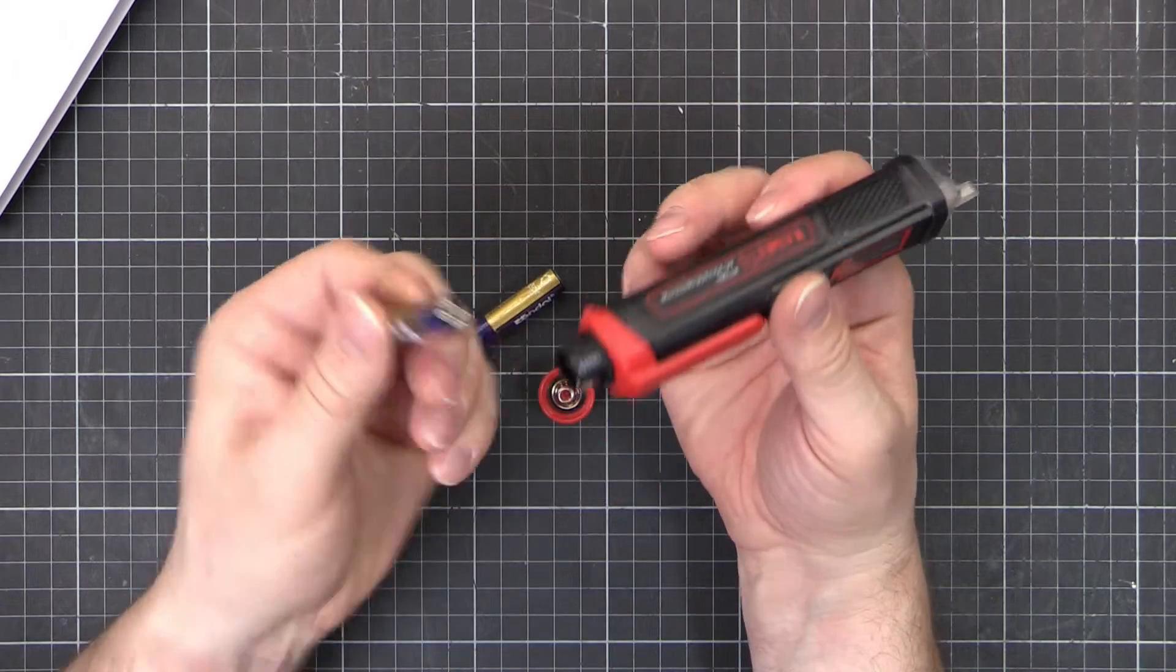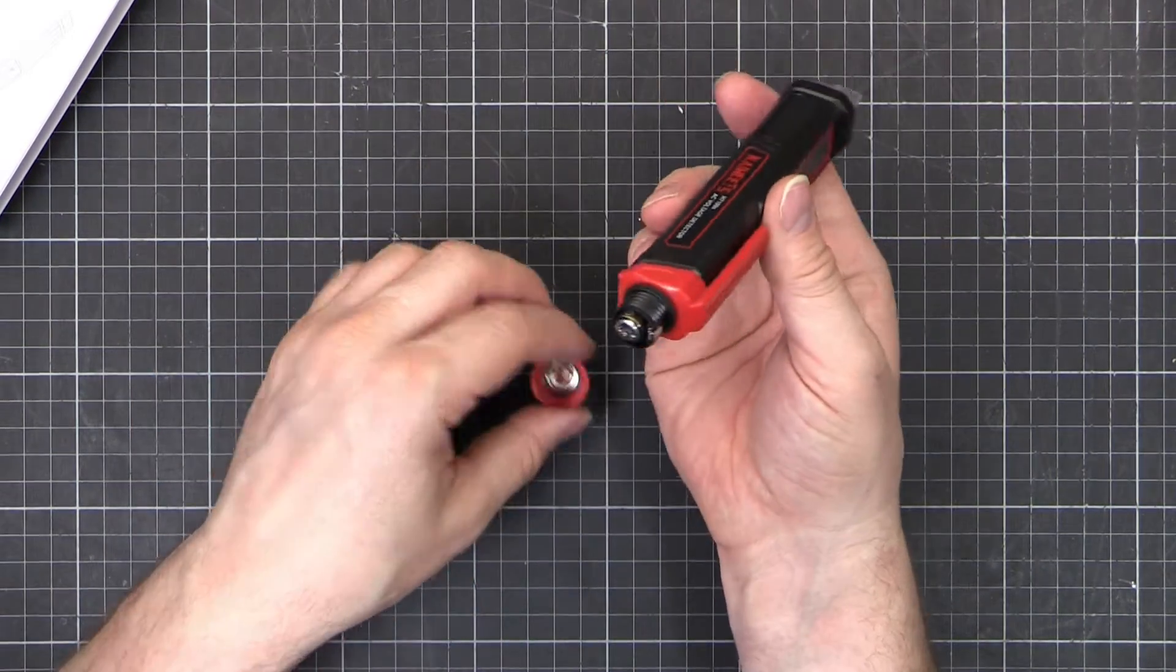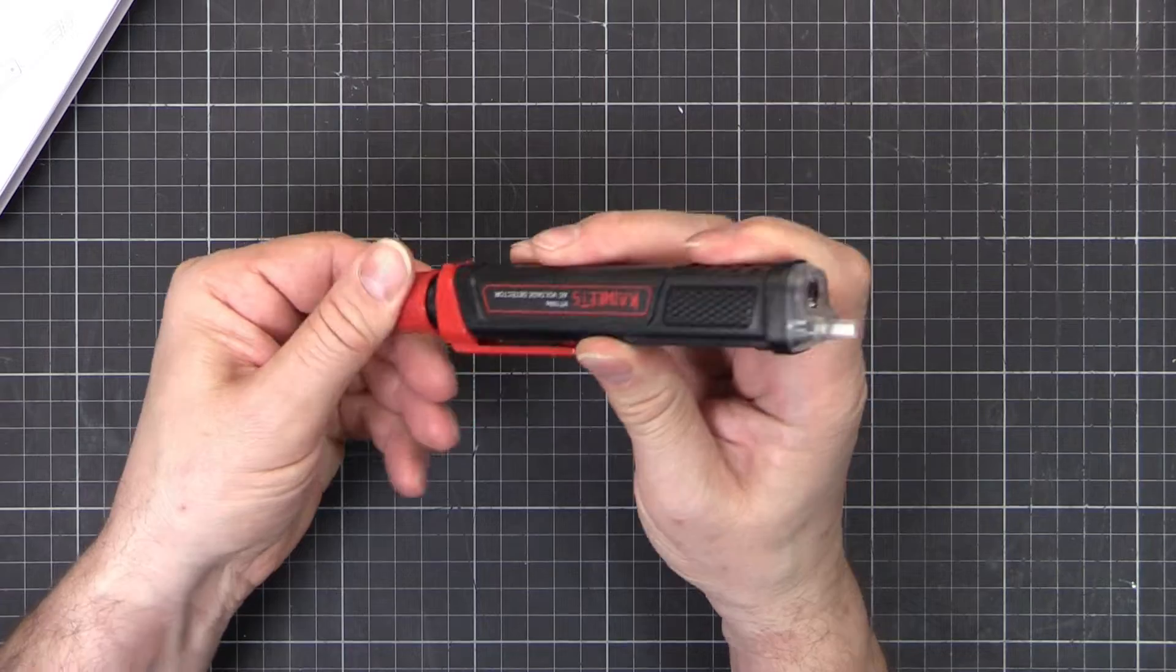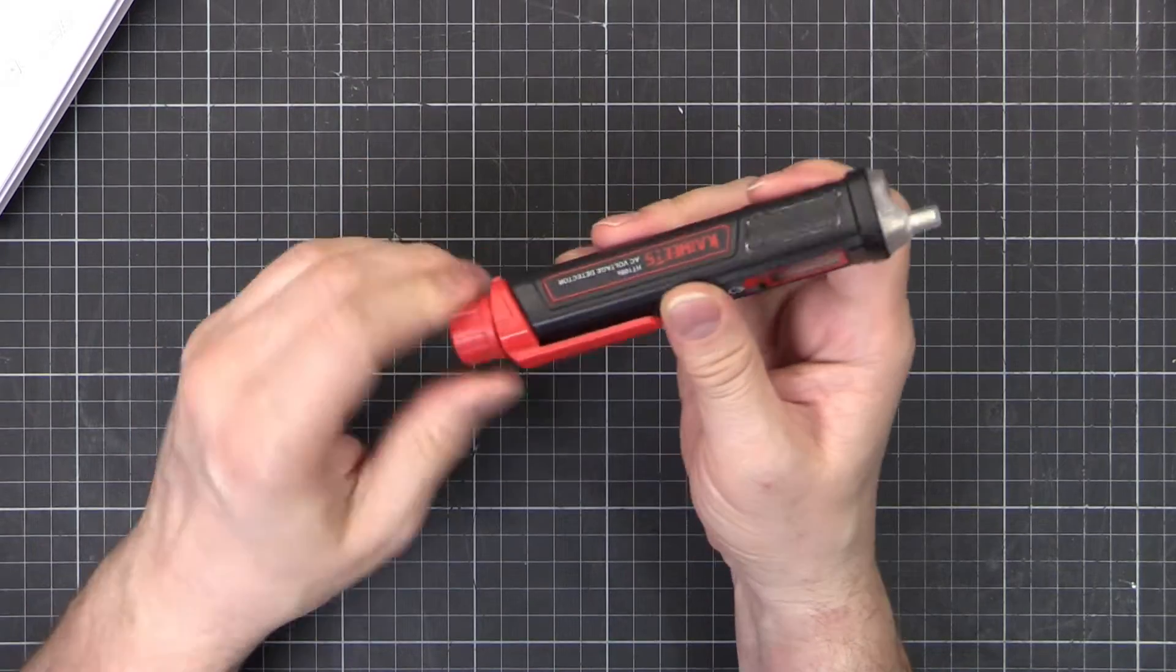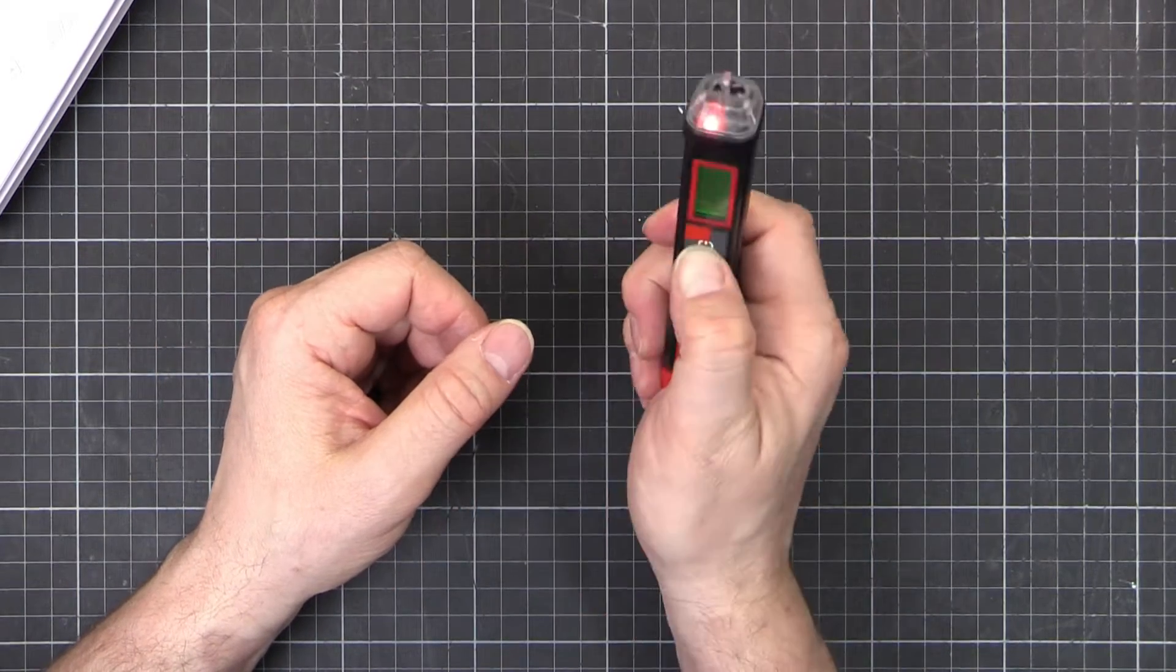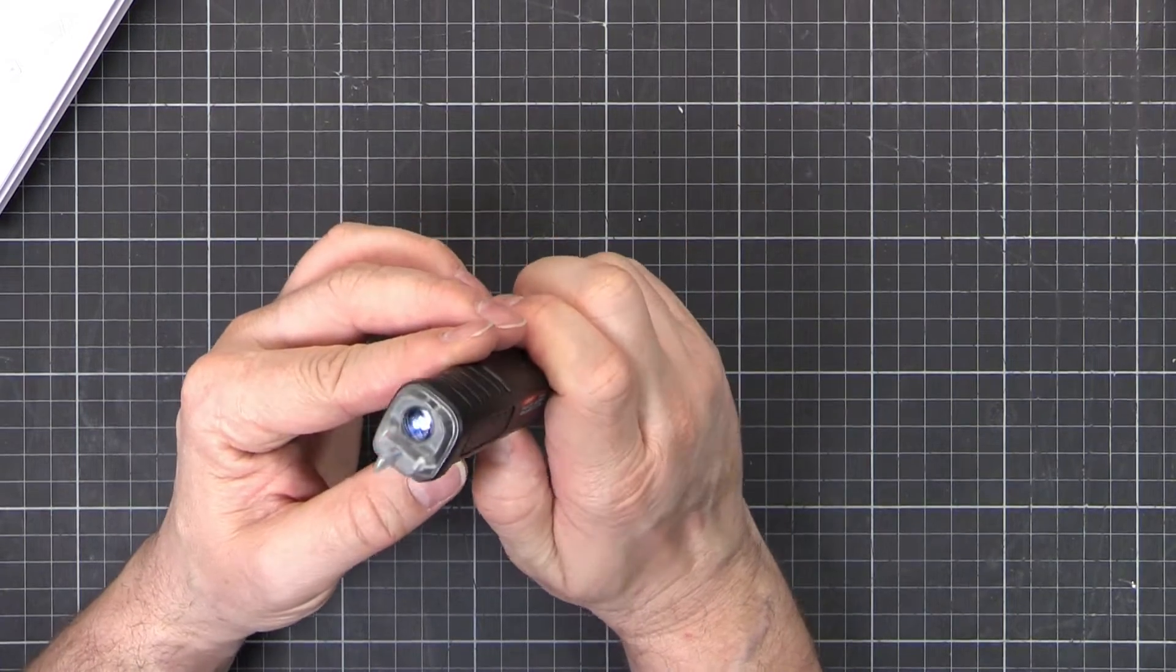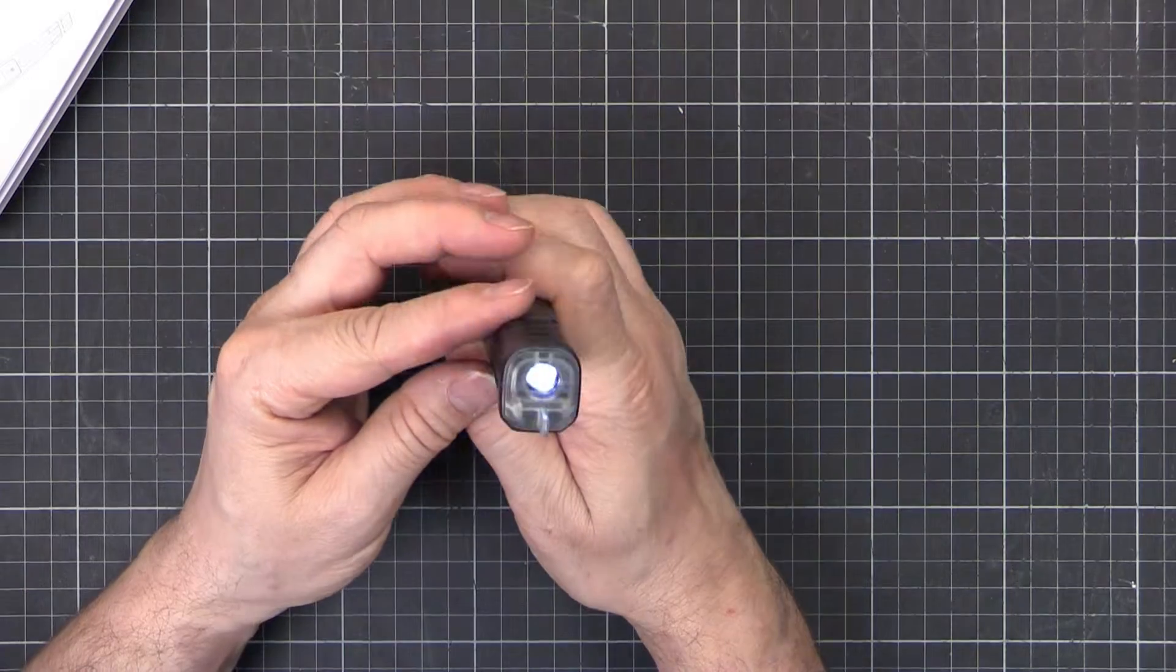Said in the manual the positive end goes towards the front. There we go, that's on. And it looks like it's got a flashlight. Nice.